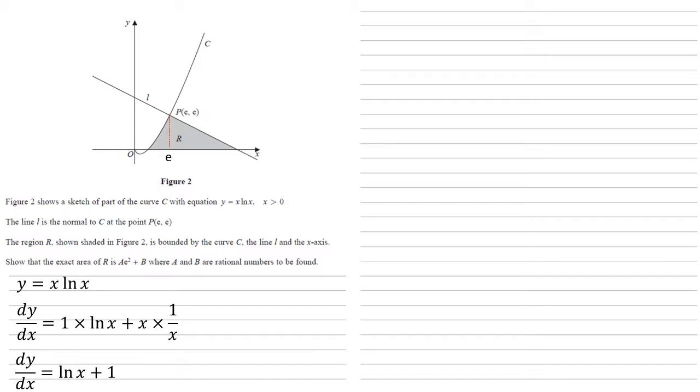So at the point P, x is equal to e. So dy/dx equals ln e plus 1. Well, ln e is equal to 1, so that equals 2. As the line L is the normal to C, it's equal to the negative reciprocal of the gradient of C. Hence it's equal to minus a half.